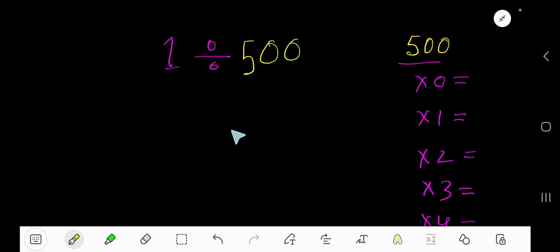1 divided by 500. Okay, 500 goes into 1 how many times? Actually less than 500.